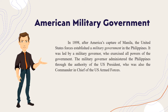In 1898, after America's capture of Manila, the United States forces established a military government in the Philippines. It was led by a military governor, who exercised all powers of the government. The military governor administered the Philippines through the authority of the U.S. President, who was also the commander-in-chief of the U.S. Armed Forces. The President of the United States had the power to establish a military government in the Philippines as commander-in-chief. His authority was delegated to the military governor, who exercised all powers of the government—executive, legislative, and judiciary—as long as the war lasted. The first military governor was Wesley Merritt, the second was General Elwell Otis, and the third and last was Major General Arthur MacArthur.